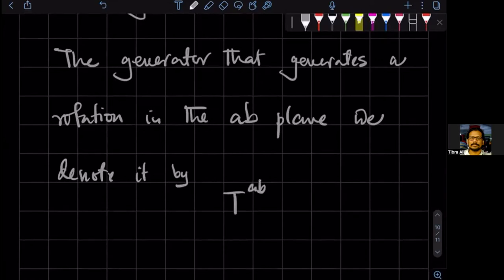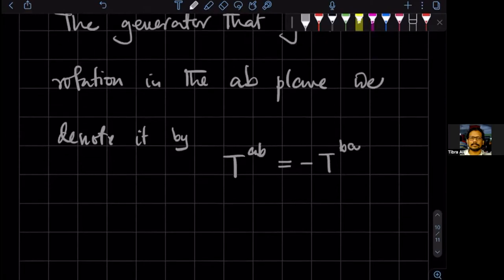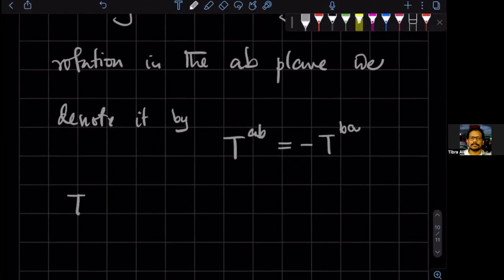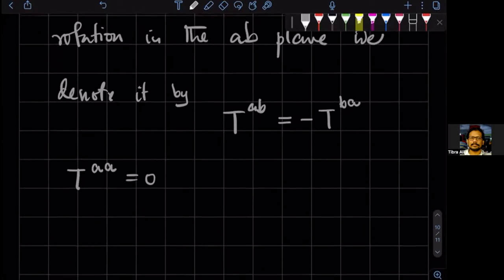So this is not an index, it's a superscript. And the way we label the generators is that they're antisymmetric in their superscript. Because they're antisymmetric in their superscript, there are no generators with the same two superscripts.